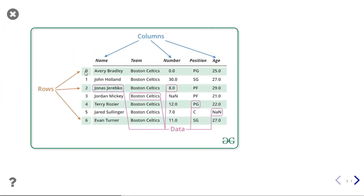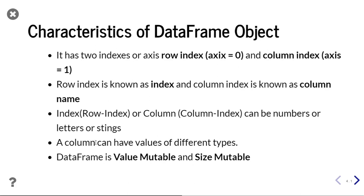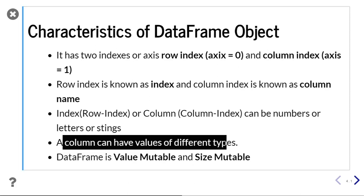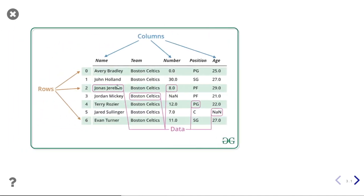The row index is currently in number format but it can be in string or character format also. Similarly, column names — name, team, number, position, and age — can also be string, character, or any number. A column can have values of different types. For example, the name column currently has string data type only, but it can have numerical data type also. So we can combine different data types in a single column.